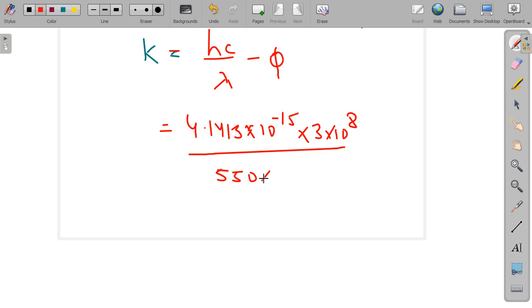to the power minus 9, and phi is 4.3. After solving this, we get the value of maximum possible kinetic energy that is k equals minus 2.0411. As we see, it is negative.